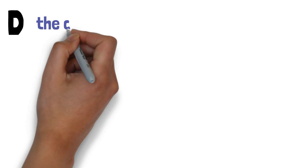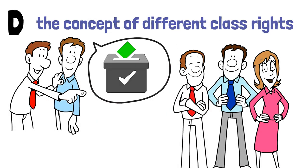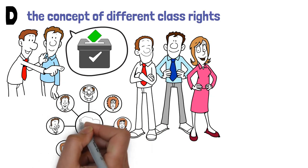D. The concept of different class rights. Should these potential shareholders be allowed to vote? Doing this gives you control over who becomes a shareholder of your company.